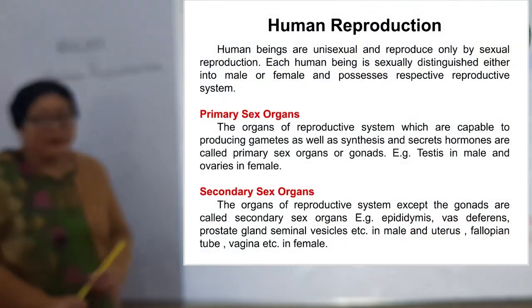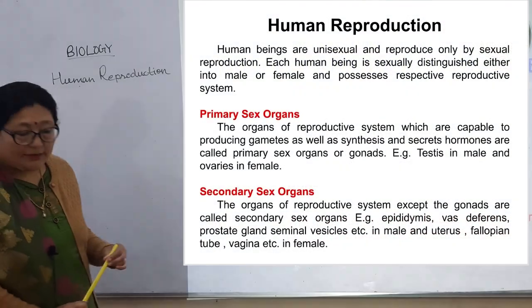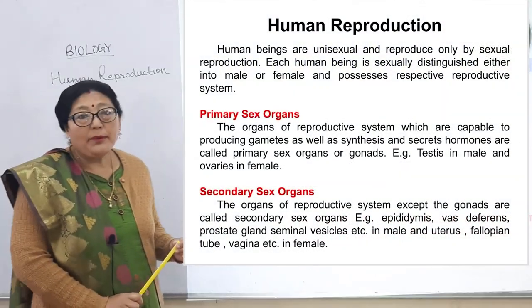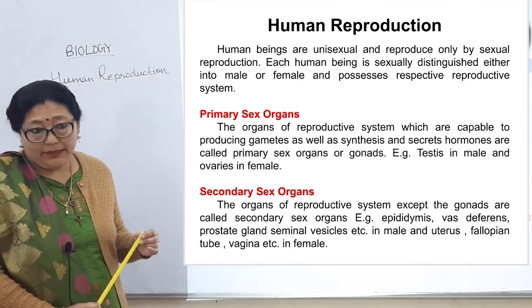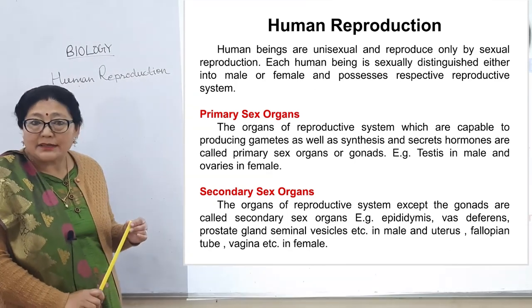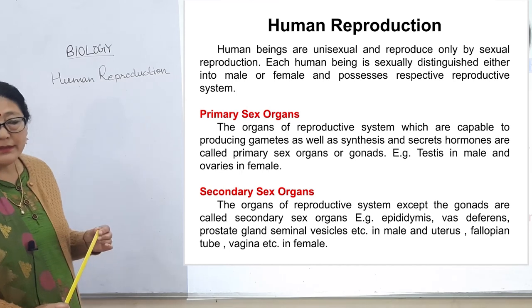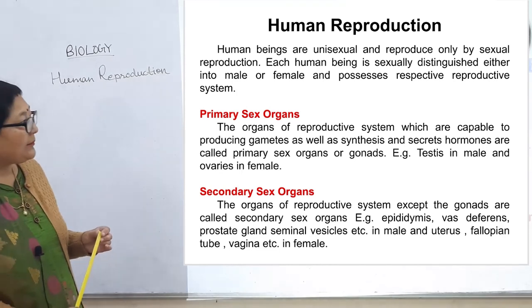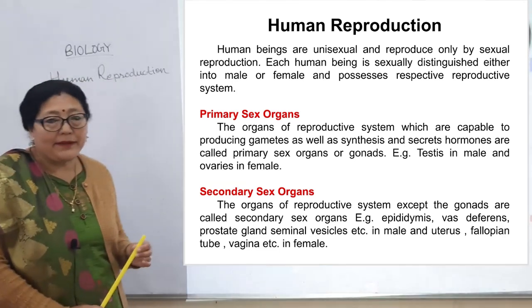Human Reproduction chapter is a very important lesson in this class, so it needs minimum four or five classes.